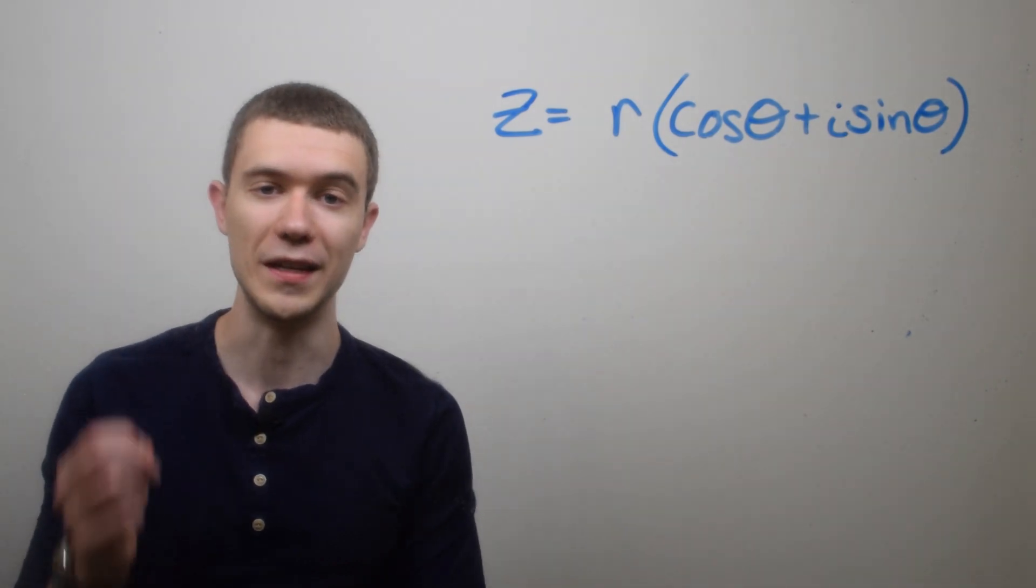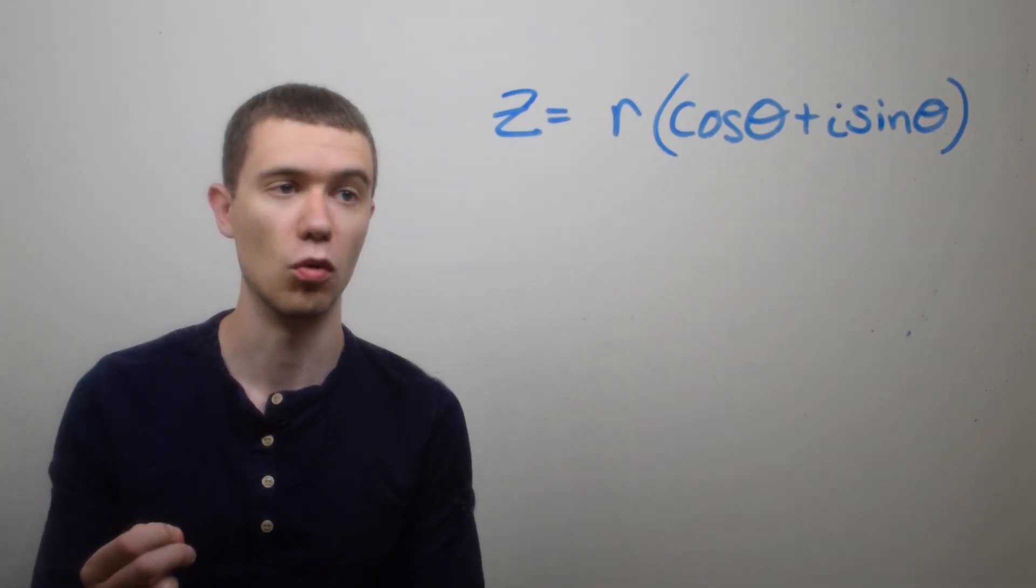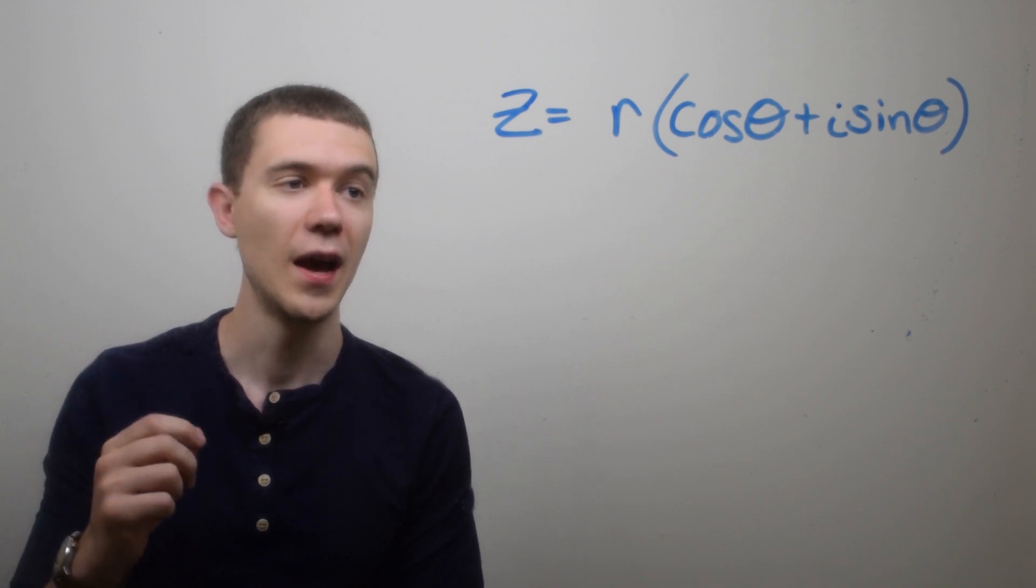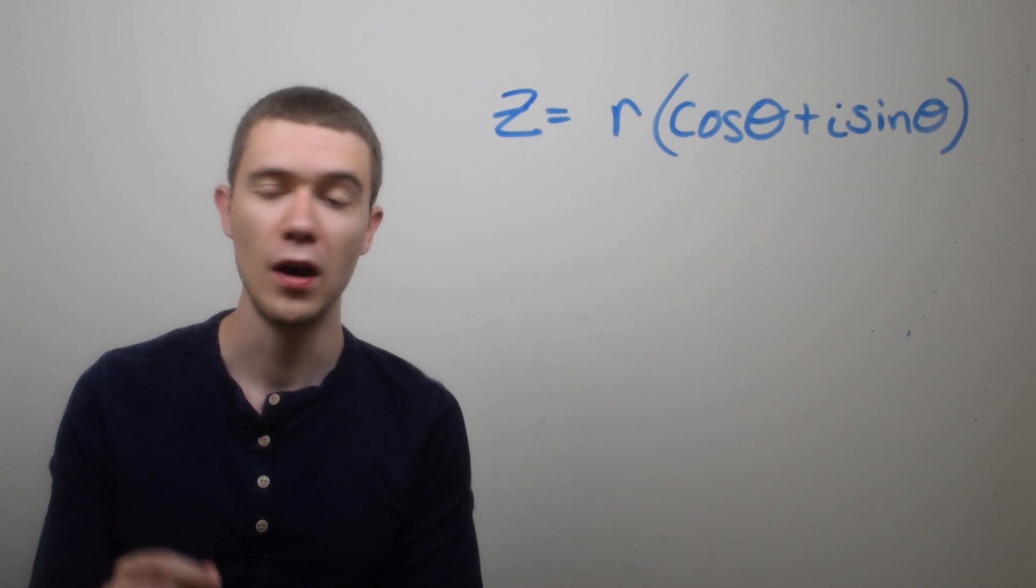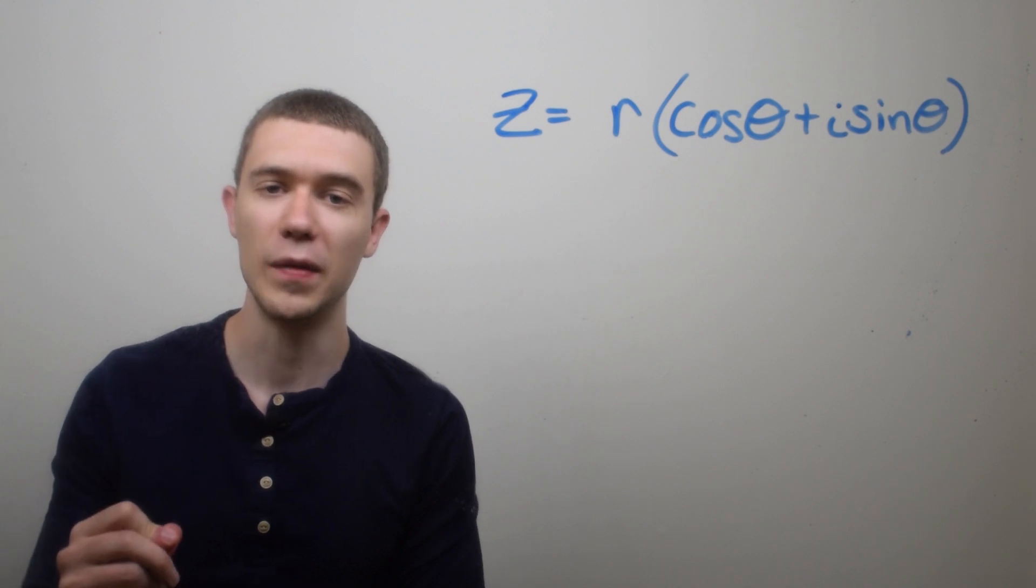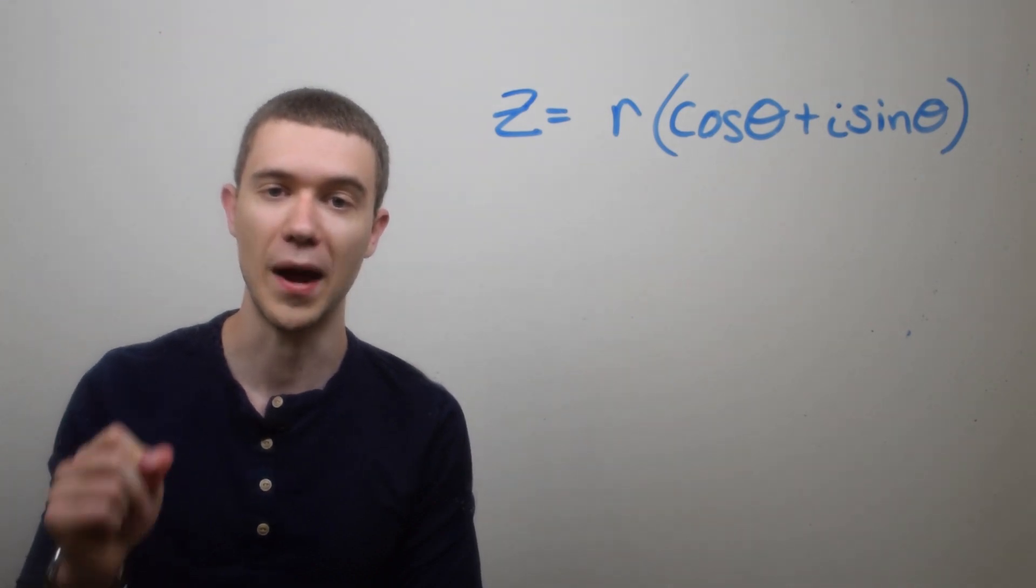So here I've written z, a complex number, in its polar form. Remember that means r, which is really the length of the vector z, times (cosine θ + i sine θ), where θ is the argument or the angle the vector makes with the x-axis. Let's see what happens if I raise this to the power n.